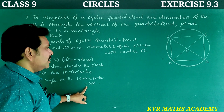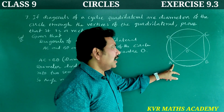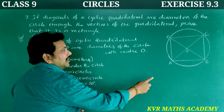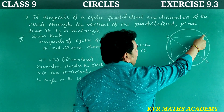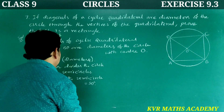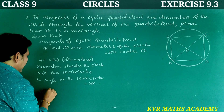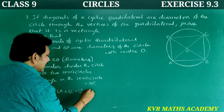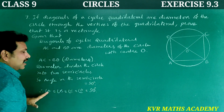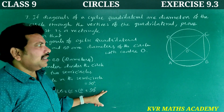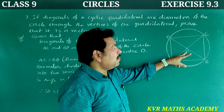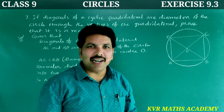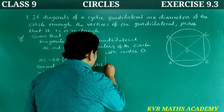Since angle in a semicircle equals 90°, we have angle A = angle B = angle C = angle D = 90°. So all angles of quadrilateral ABCD are 90 degrees. Now we will prove that the opposite sides are equal.